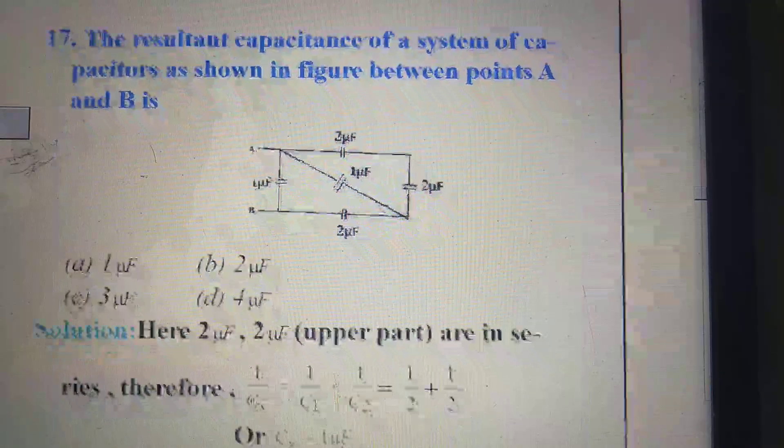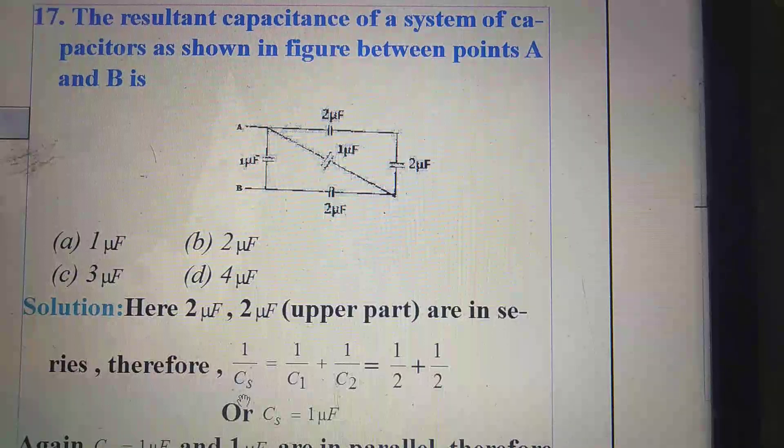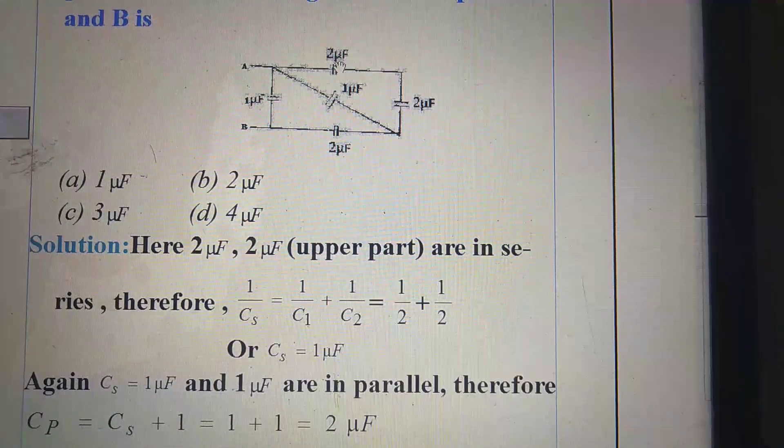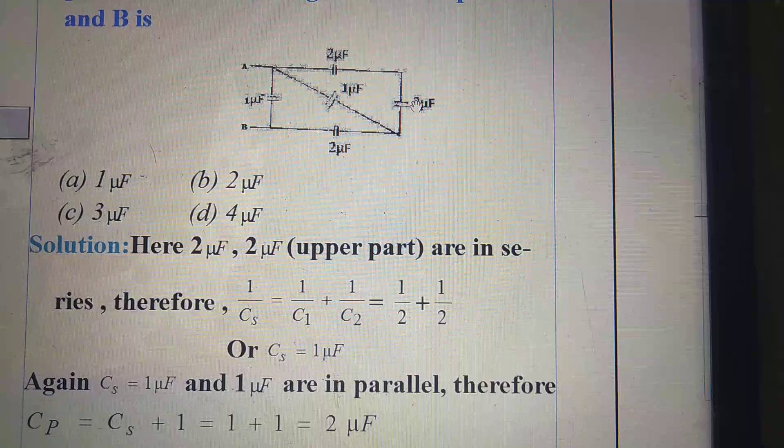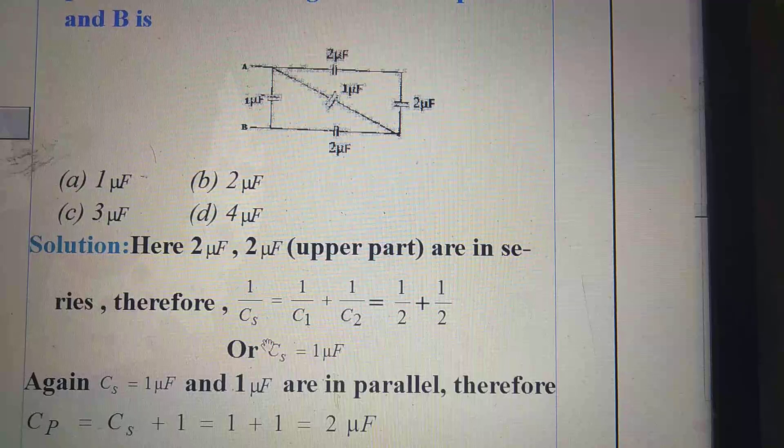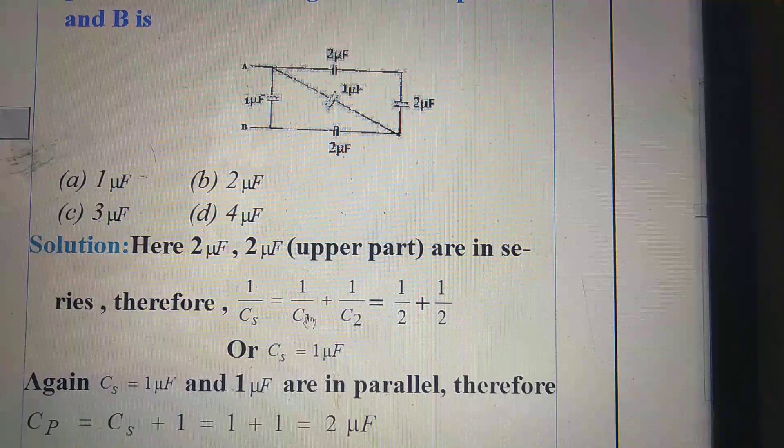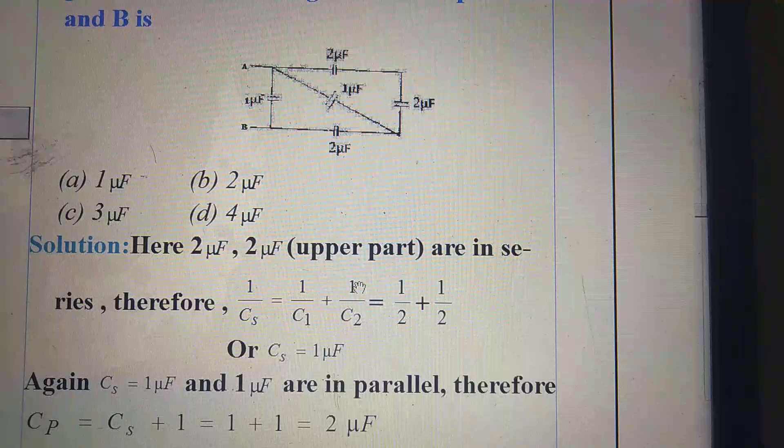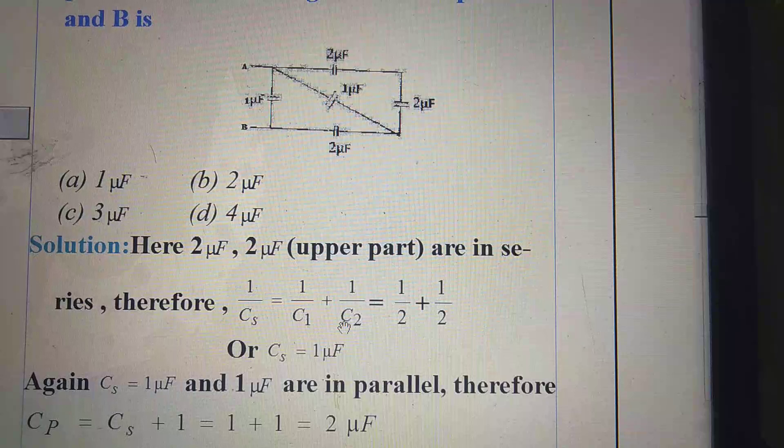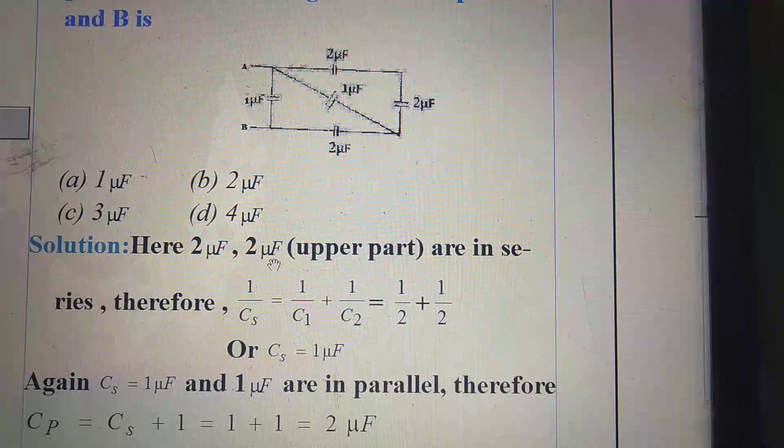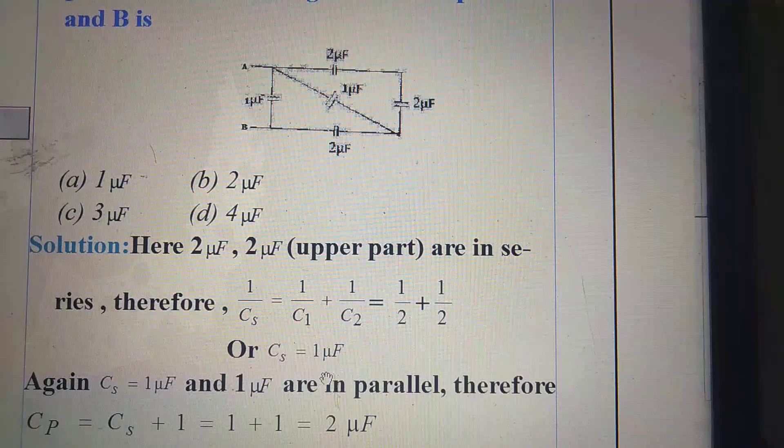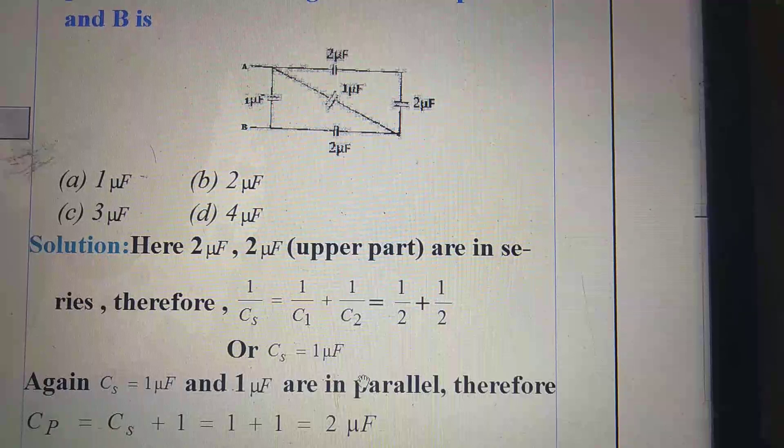How can you solve this one? Let's see. Here, upper part, that is 2 microfarad, 2 microfarad, are in series. So, we use the concept of series formula. 1 by C is equal to 1 by C1 plus 1 by C2. C1 and C2 values is 2 microfarad each. After calculation, we got C as 1 microfarad.